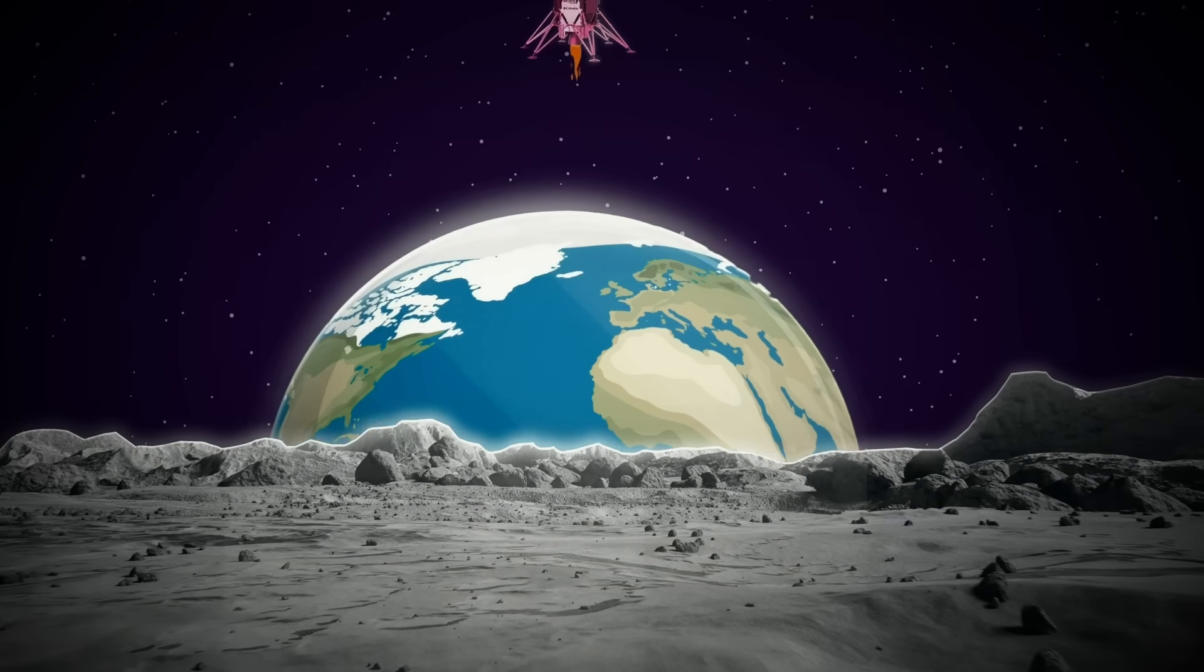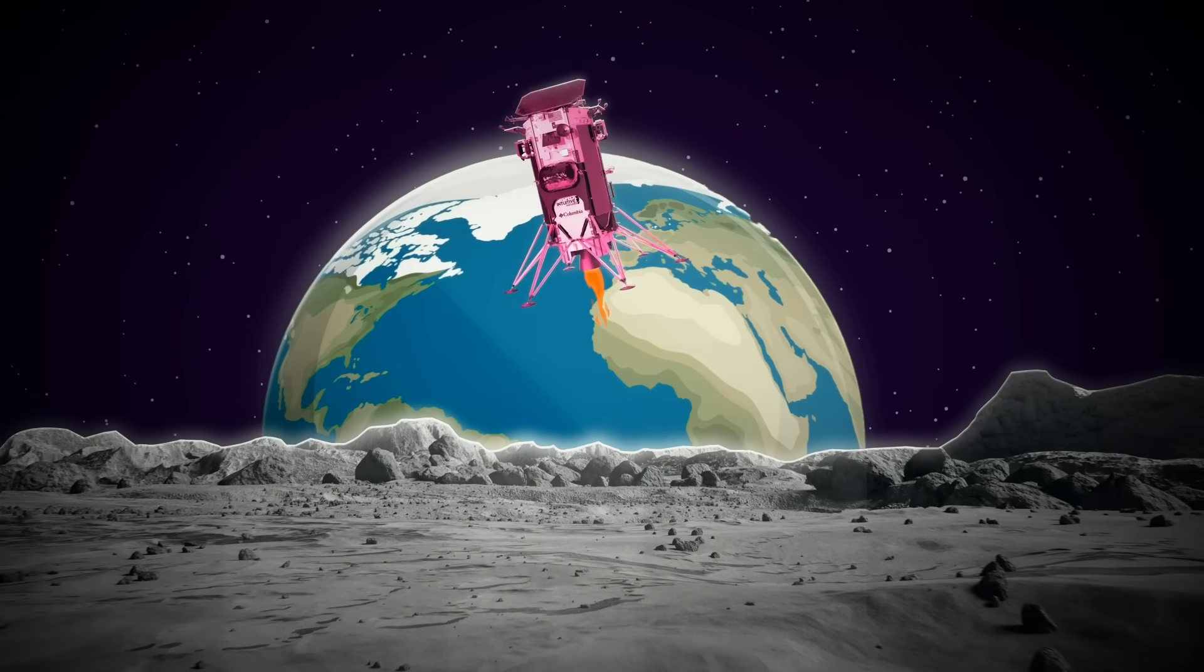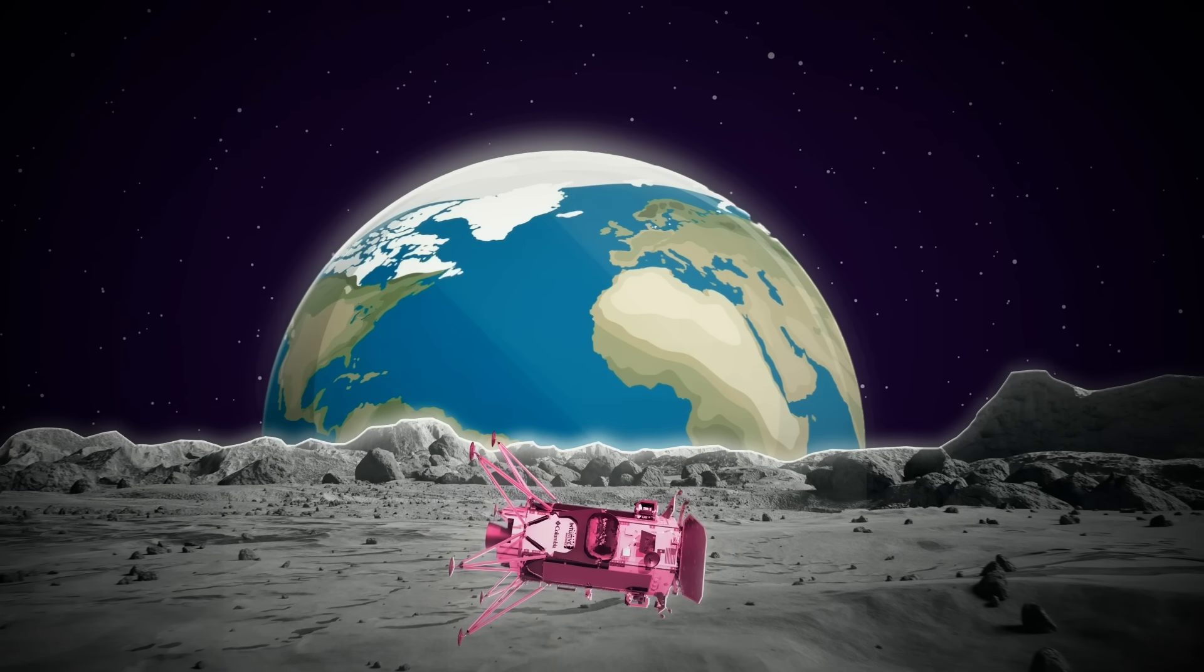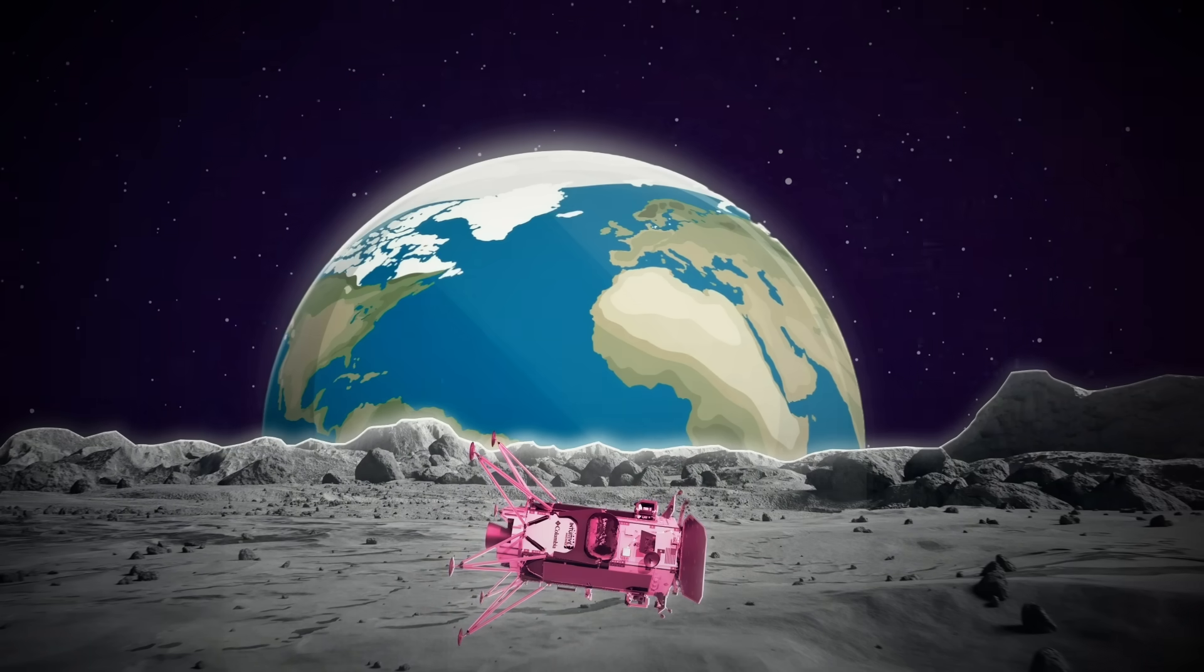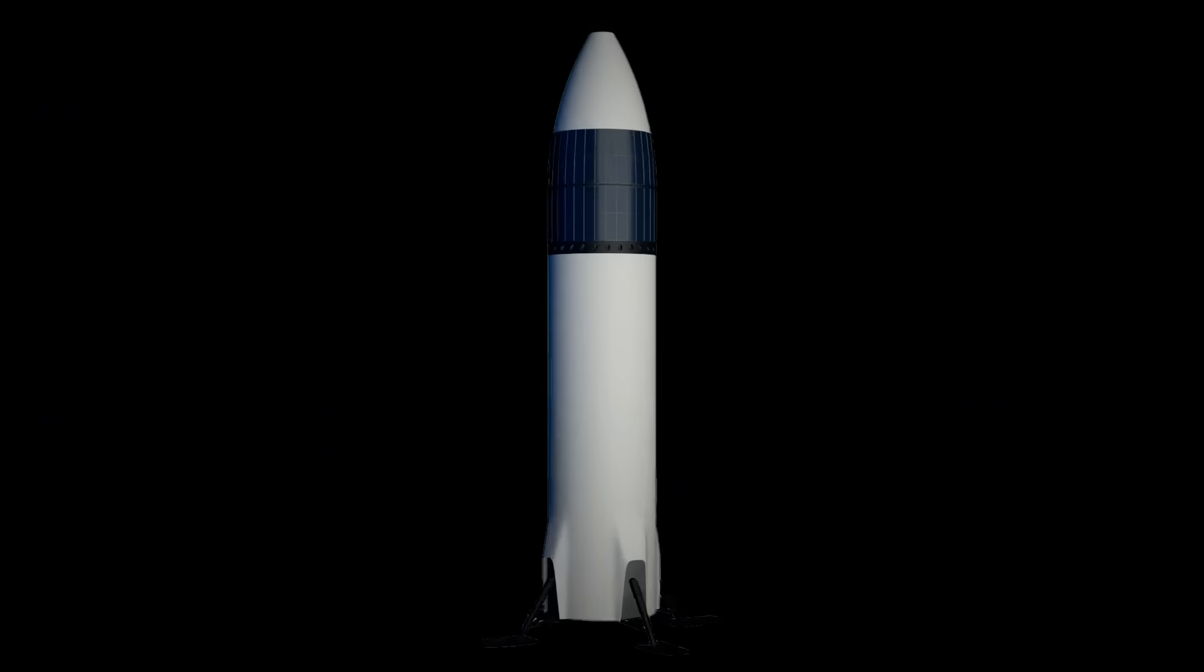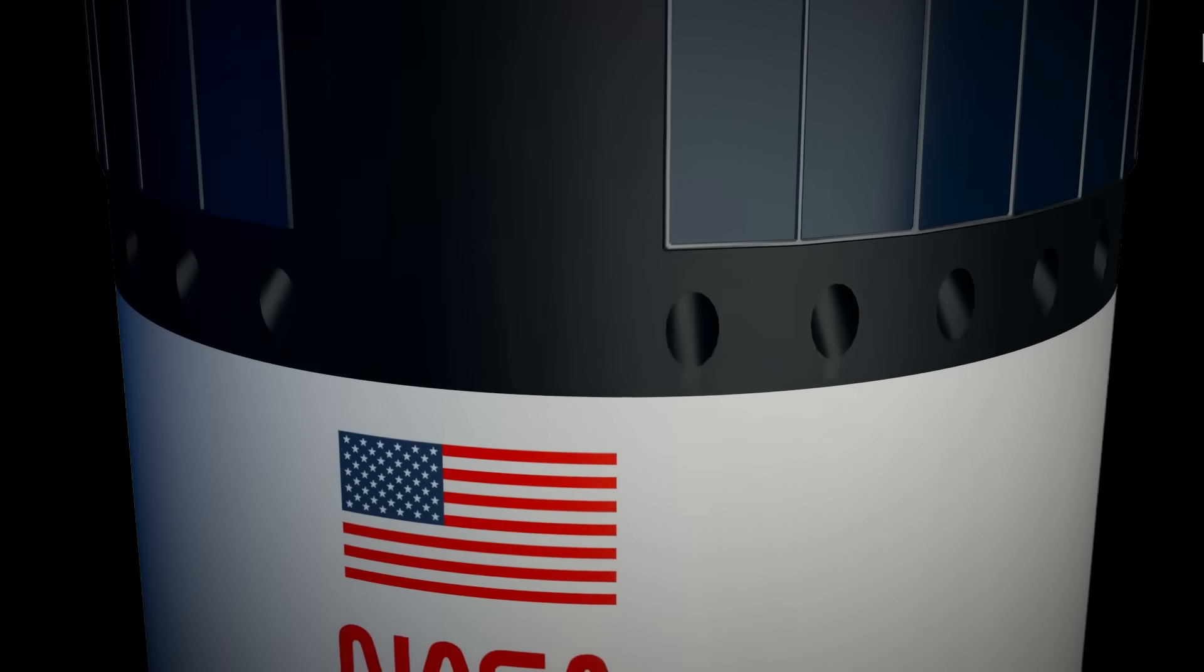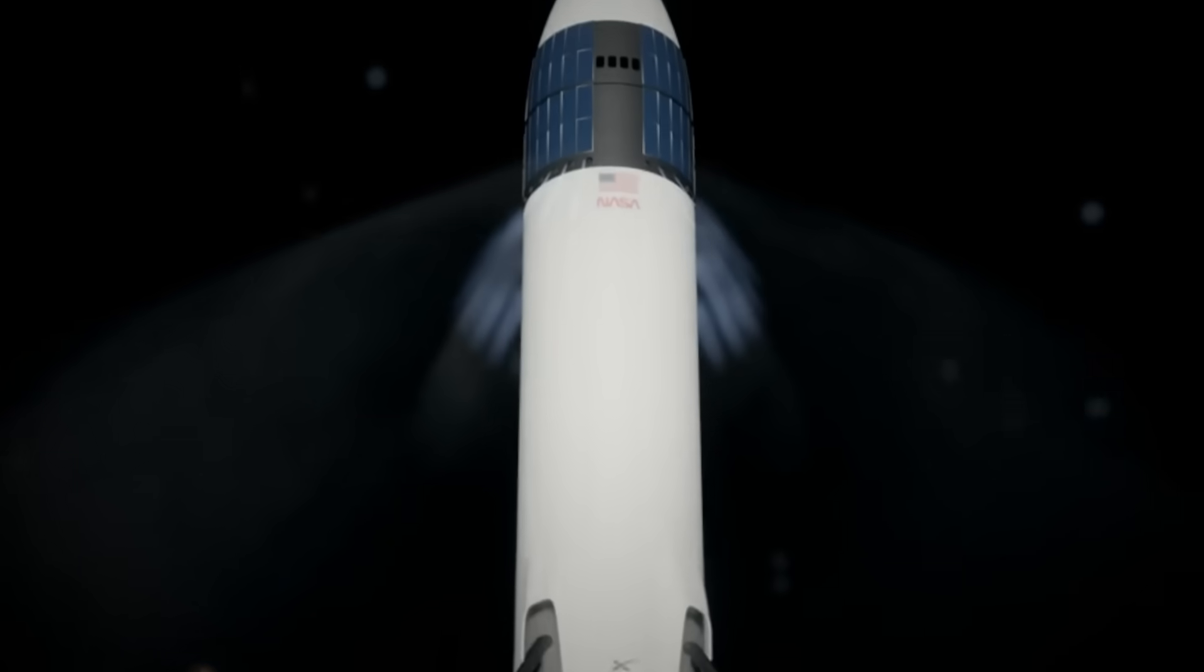Remember the Intuitive Machines lander that tipped over on the Moon recently? It was also tall and narrow like a starship, so tipping over will be a big concern with a vehicle like this. There's not much gravity holding you down, but moving the thruster closer to the ship's center of mass and pointing them out at an angle will help a lot to keep it stable and prevent any sideways momentum.